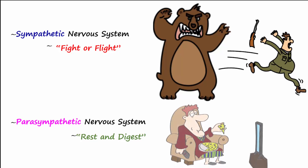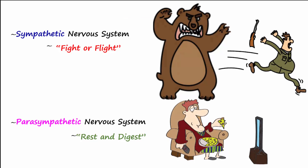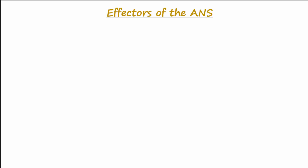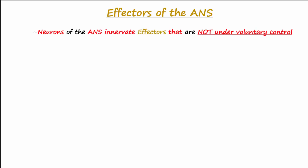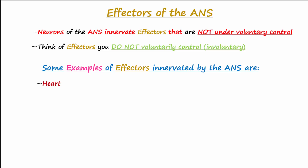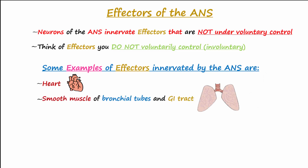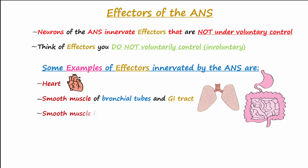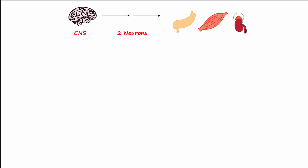The ANS innervates effectors that are not under voluntary control — think of organs and glands in your body which you do not voluntarily control. Some examples of effectors innervated by the ANS are the heart, the smooth muscles of the bronchial tubes and GI tract, smooth muscles lining the blood vessels, and glands.